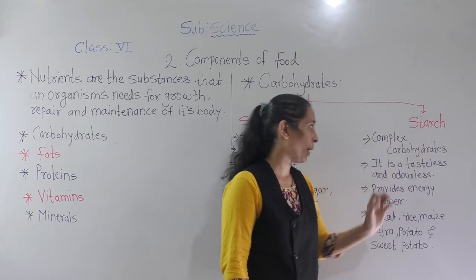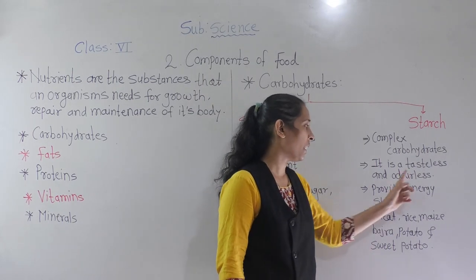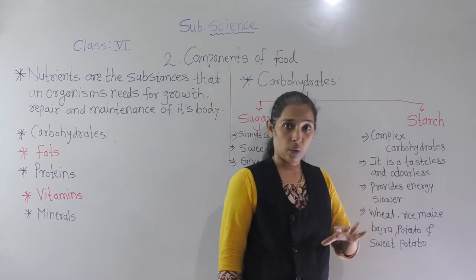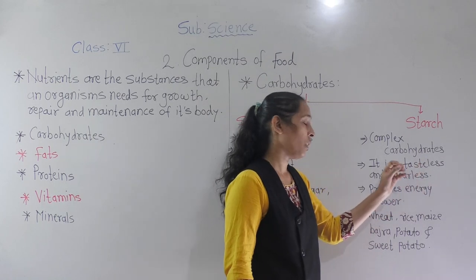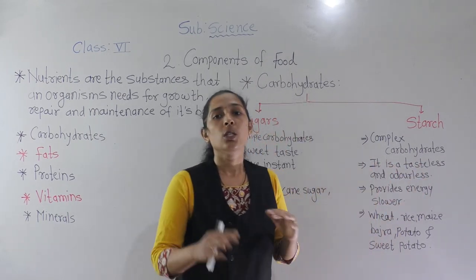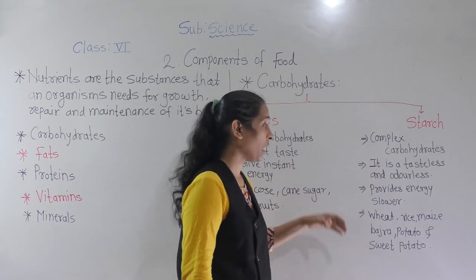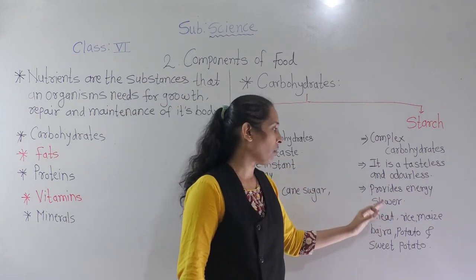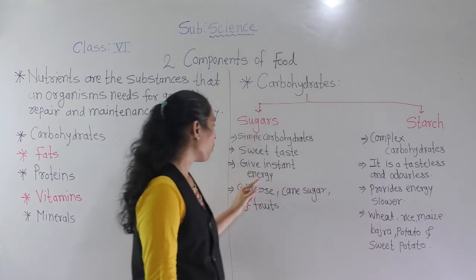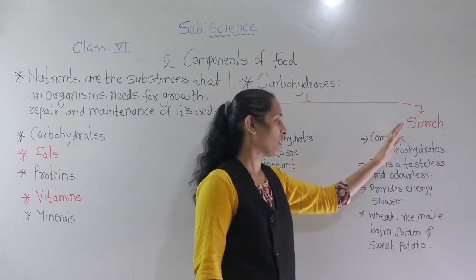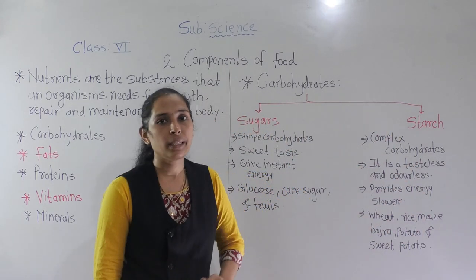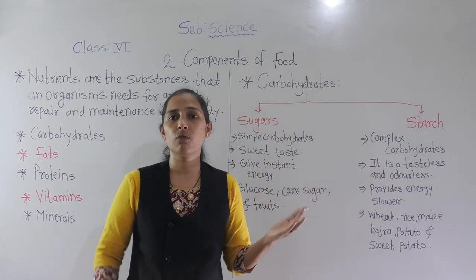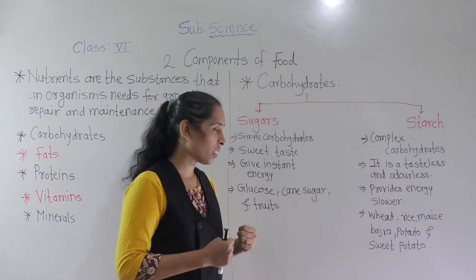The plant stores remaining food in its leaves in the form of starch, so starch is the storing material of the plant and it is a complex carbohydrate. Pure starch is tasteless and odorless — it is a white powder. Comparing sugar and starch: sugar gives instant energy, but starch provides energy slower as compared to sugar. Now let's discuss the sources of starch.